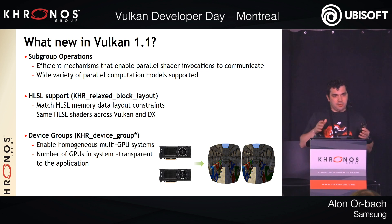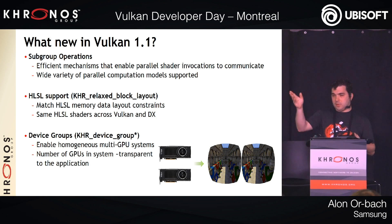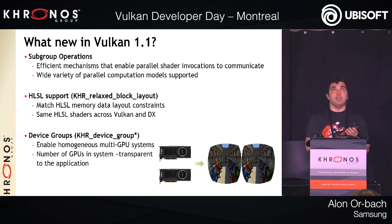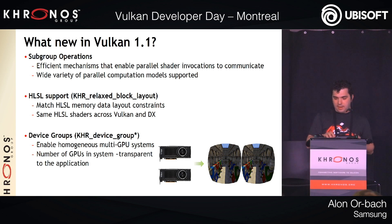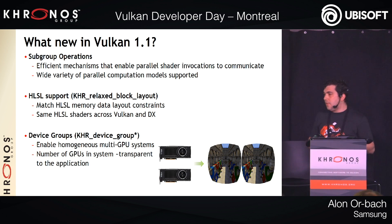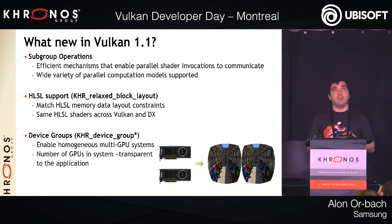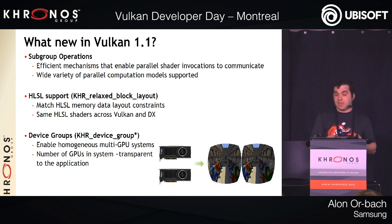What's new in Vulkan 1.1? It primarily wraps up extensions developed over the past year plus some brand new functionality. Subgroups — enabling parallel shader invocations — is a key feature developers pushed for, which Daniel will talk about later. HLSL support is growing in importance, with relaxed block layout precision added in 1.1. KHR device group, enabling targeting of multiple GPUs on a system, is now a core feature in Vulkan 1.1.